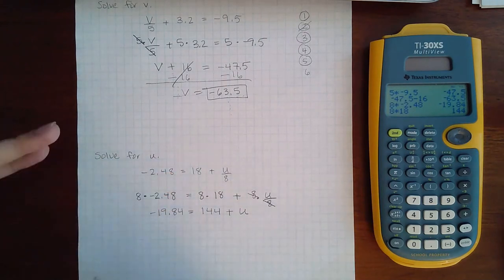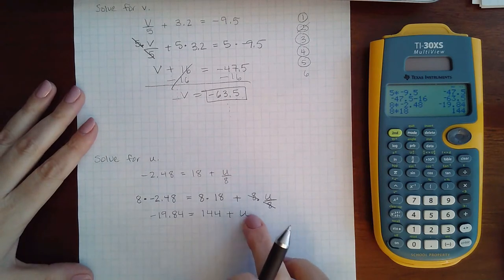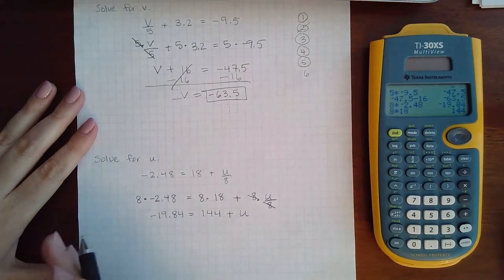Then I would try to move all the variables to one side, there's only one variable and it's over here on the right hand side, which means the next step is to move the constants to the other side.